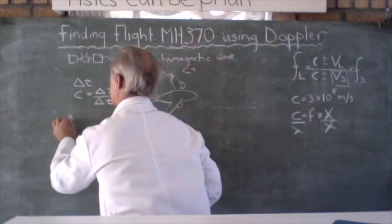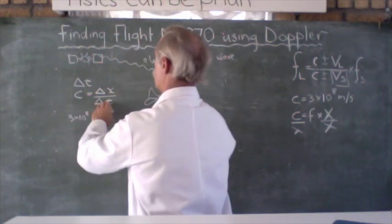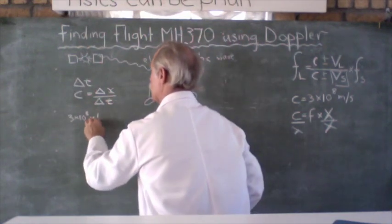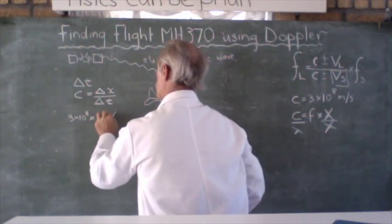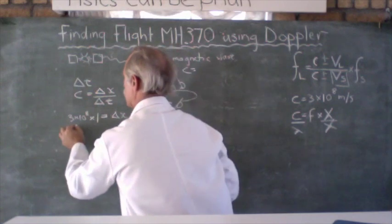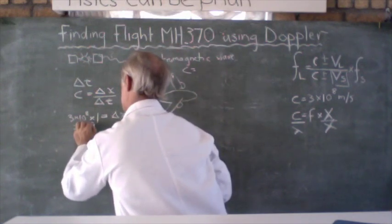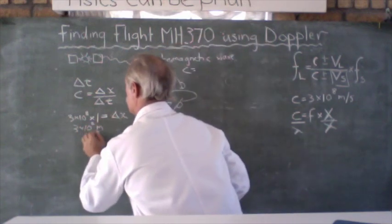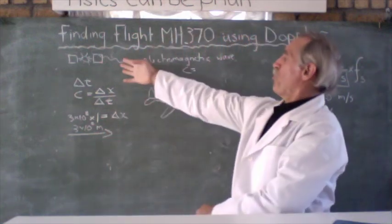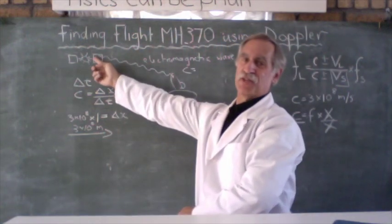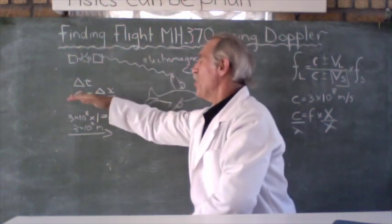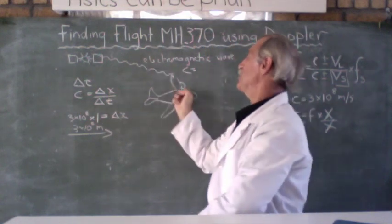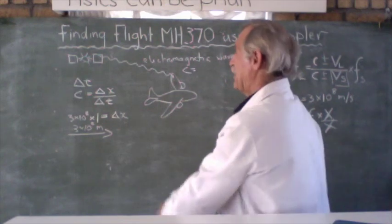They knew delta T, they knew the speed of light. And then they used the formula C equals distance or delta X over delta T. So because they knew C, which was equal to 3 times 10 to the 8, cross multiplying times, let's say the signal took 1 second, delta X would therefore be equal to 3 times 10 to the 8.